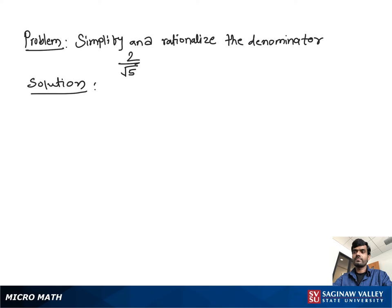Simplify and rationalize the denominator: 2 over square root 5. First, we have to make the denominator a rational number, and to make it rational we have to remove the radical sign — the square root — which we do by multiplying square root 5 by both the numerator and denominator, which helps us make the denominator a rational number.